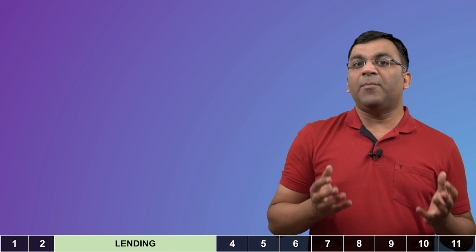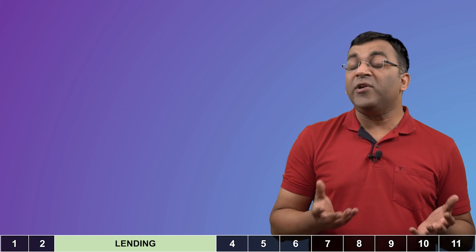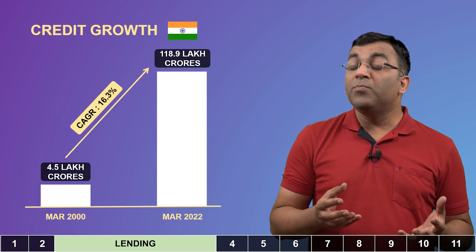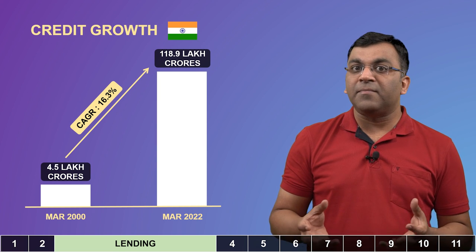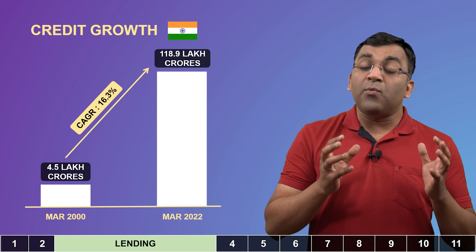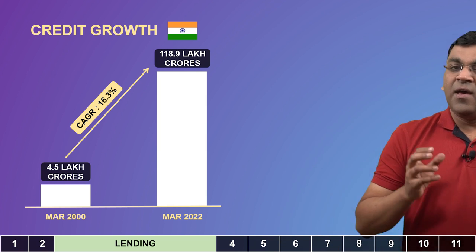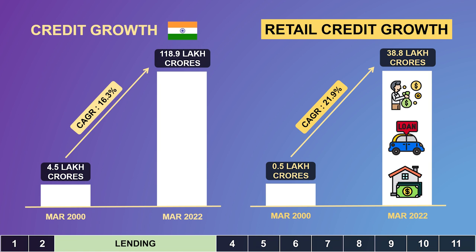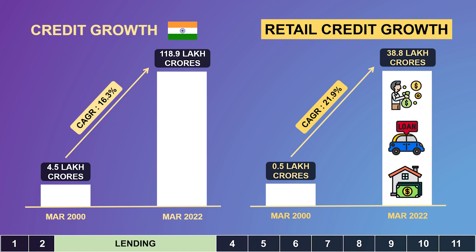The other side of deposits are the advances or loans given by a bank to individuals and corporates. Over the last two decades, banks have seen their loan book grow by 16% per annum, and this number is now at 118 lakh crores. The big driver of credit growth has been retail loans — personal loans, vehicle loans, home loans. As aspirations grow and given India's large consuming population, there is every likelihood we'll see 14-17% credit growth for at least the next two decades.